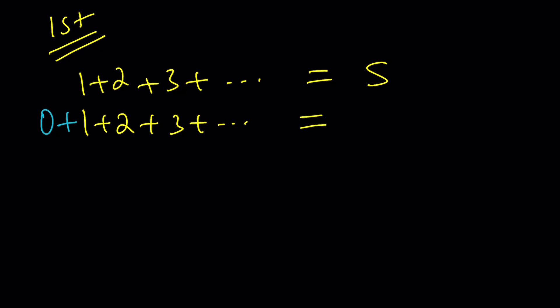Cool. But why is it important? Why would you add 0? What's the purpose? Here is how it goes. I'm going to write my original sum, 1 plus 2 plus 3 dot dot dot equals S. And then I'm going to write the version with 0, but this time I'm going to shift it over.